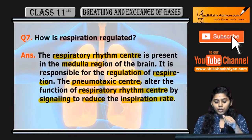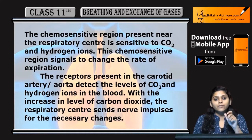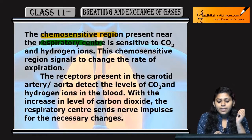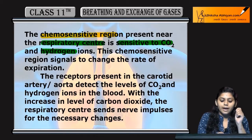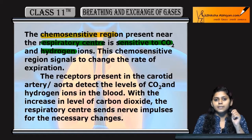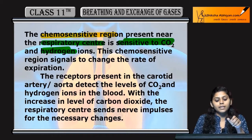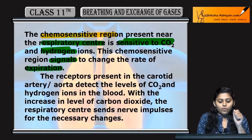Kuch chemo-sensitive regions present hote hain near the respiratory center. Ye bahut hi sensitive hote hain CO₂ and hydrogen ions ke liye. Ye signal karte hain taaki rate of expiration change ho sake.